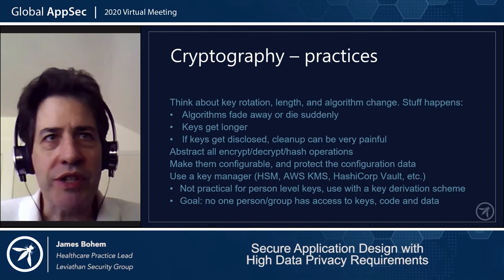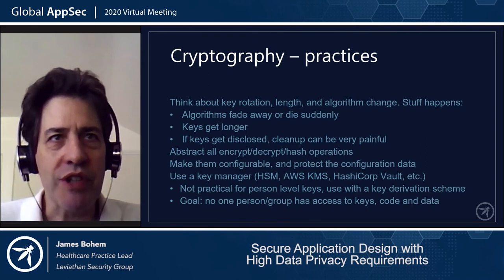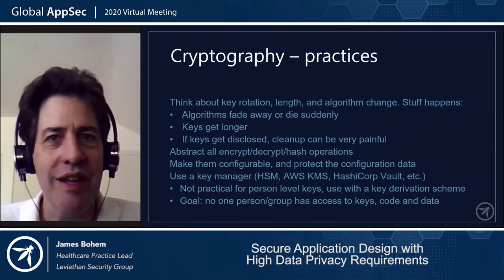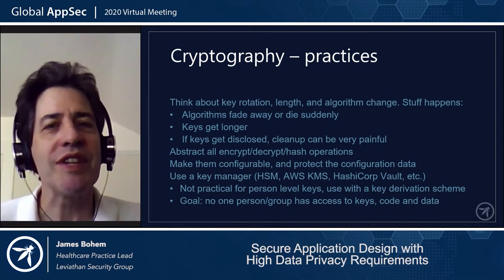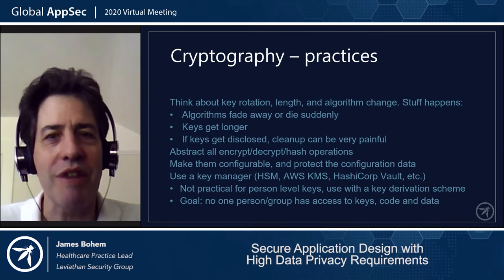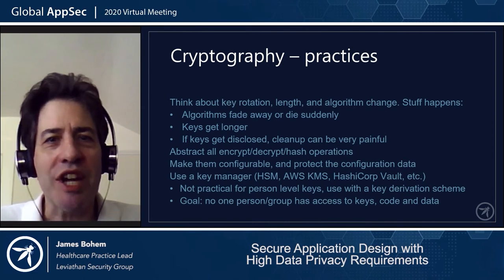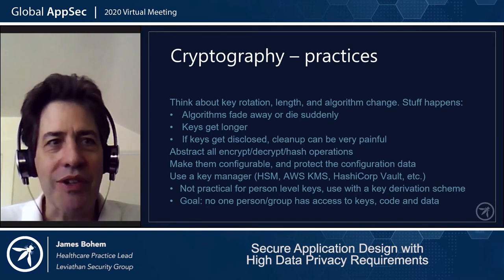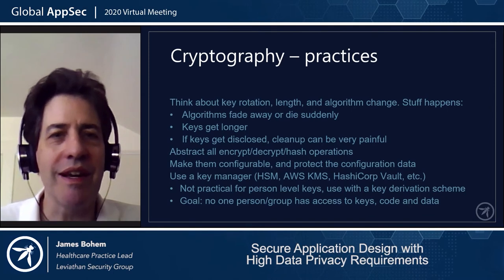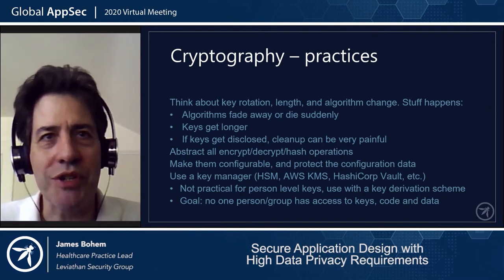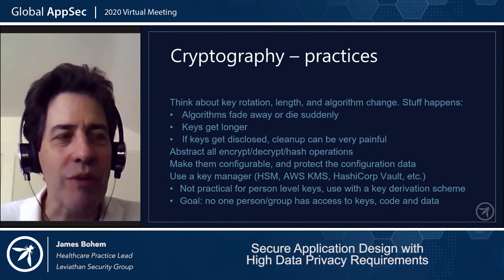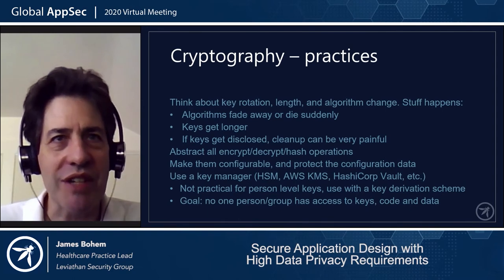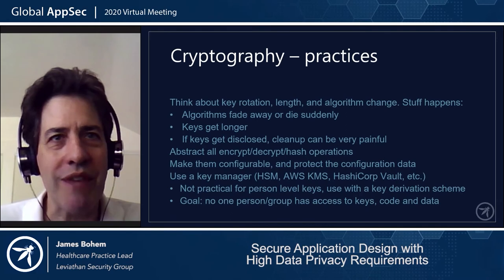About rotation, key length, and algorithm changes: these are trends that happen over time. There are schedules from NIST showing when your chosen algorithm and key length is good until and when you should re-evaluate. If keys aren't stored very carefully and get disclosed, the cleanup can be very painful. Performing a sudden key change on billions of records is not only impractical, it involves huge downtime and disruption. If we construct an architecture where that's an extremely unlikely event and have defenses to mitigate key disclosure, it helps enormously under that worst-case scenario.